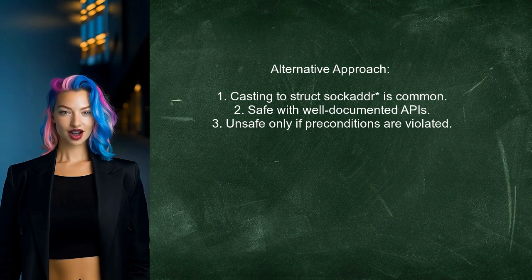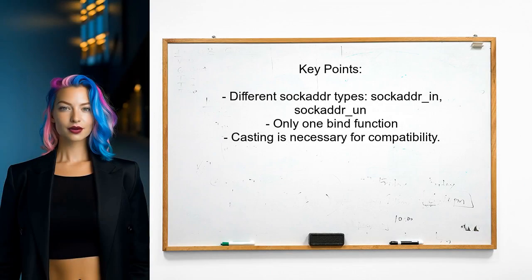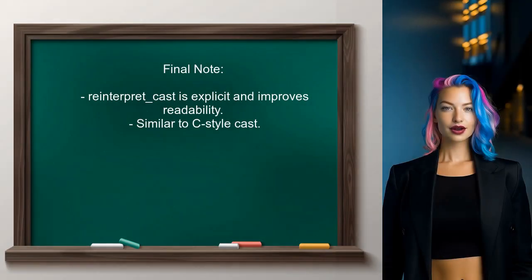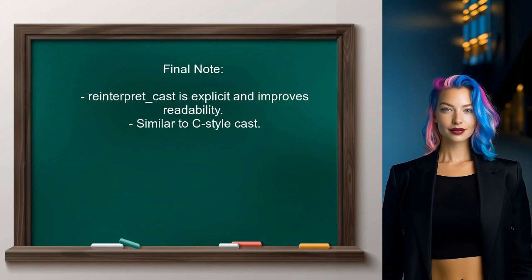Different types of sockaddr exist — like sockaddr_in and sockaddr_un — but there's only one bind function, so casting is necessary. The user also notes that while reinterpret_cast is similar to a C-style cast, being explicit with reinterpret_cast improves code readability.